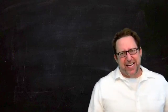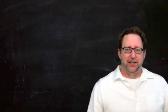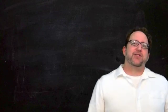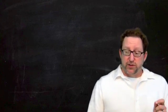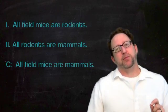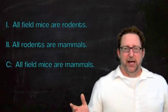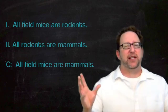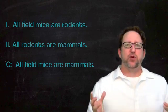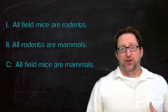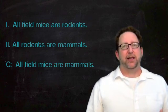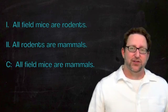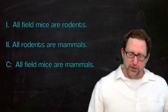Hopefully you get a sense of the difference between inductive and deductive arguments. Let me give you one more example of a deductive argument. All field mice are rodents. All rodents are mammals. Therefore, all field mice are mammals. You'll notice this is in the form of a categorical logical form — all of this, all of that, some of this. These sorts of arguments are set up so that the conclusion follows necessarily; it's impossible for the conclusion to be false. This is a deductive argument as opposed to an inductive argument.